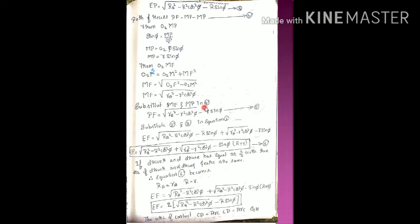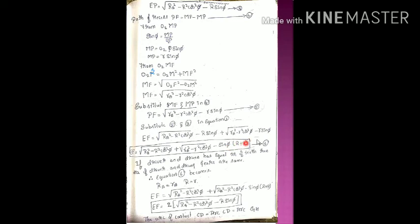We have now derived path of approach (equation 3) and path of recess (equation 5). Adding these two gives the path of contact. Path of approach: √(RA² − R²·cos²φ) − R·sin φ. Path of recess: √(ra² − r²·cos²φ) − r·sin φ. Therefore: EF = √(RA² − R²·cos²φ) + √(ra² − r²·cos²φ) − sin φ·(R + r). This is equation number six.